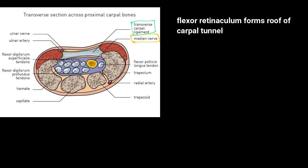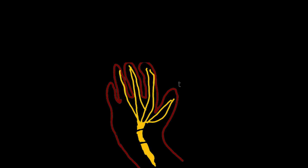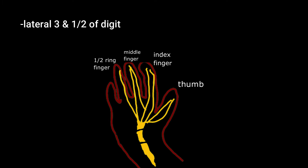The median nerve passes through the carpal tunnel and supplies the thumb, index finger, middle finger, and half of the ring finger — or the lateral three and a half digits. What is the cause for the compression of the median nerve?